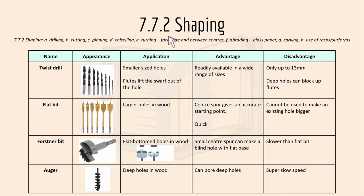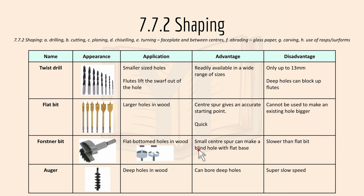Then we have 7.7.2 shaping, which includes drills. The twist drill makes smaller size holes — it's available in a wide range of sizes, but only up to 13mm, and a deep hole can block up the flutes. A flat bit makes larger holes on the wood; the center spur gives an accurate starting point and it's quick, but it cannot be used to make an existing hole bigger. A forstner bit has a flat bottom and a small center spur to make a blind hole with a flat base, but it's slower than a flat bit. The auger makes deep holes on wood and can bore deep holes, but its disadvantage is a very slow speed.